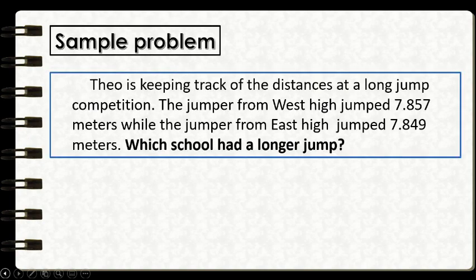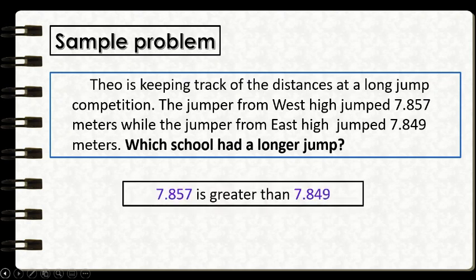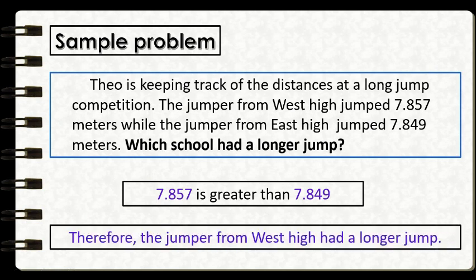Looking back at our problem — which school had a longer jump? Since we identified that 7 and 857 thousandths is greater than 7 and 849 thousandths, therefore we can say that the jumper from West High had a longer jump.